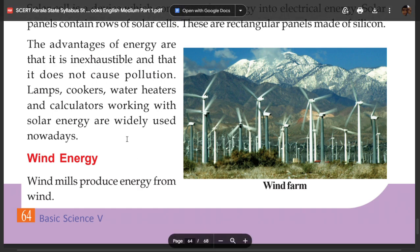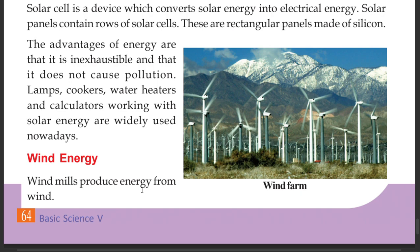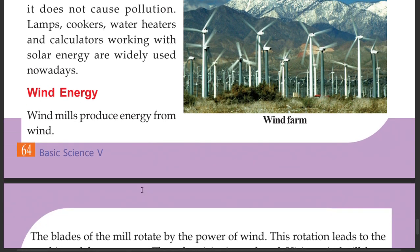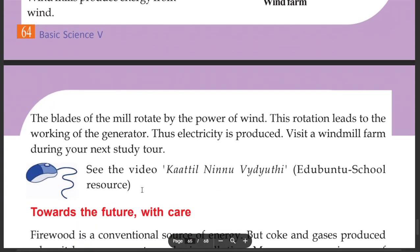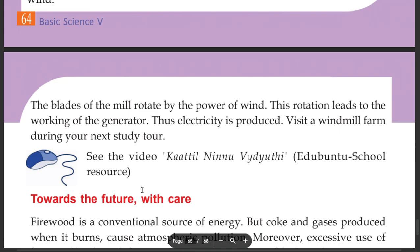Wind means producing energy from wind. The blades of the mill rotate by the power of wind. This rotation leads to the working of the generator, and thus electricity is produced. Visit a windmill farm during your next study tour.